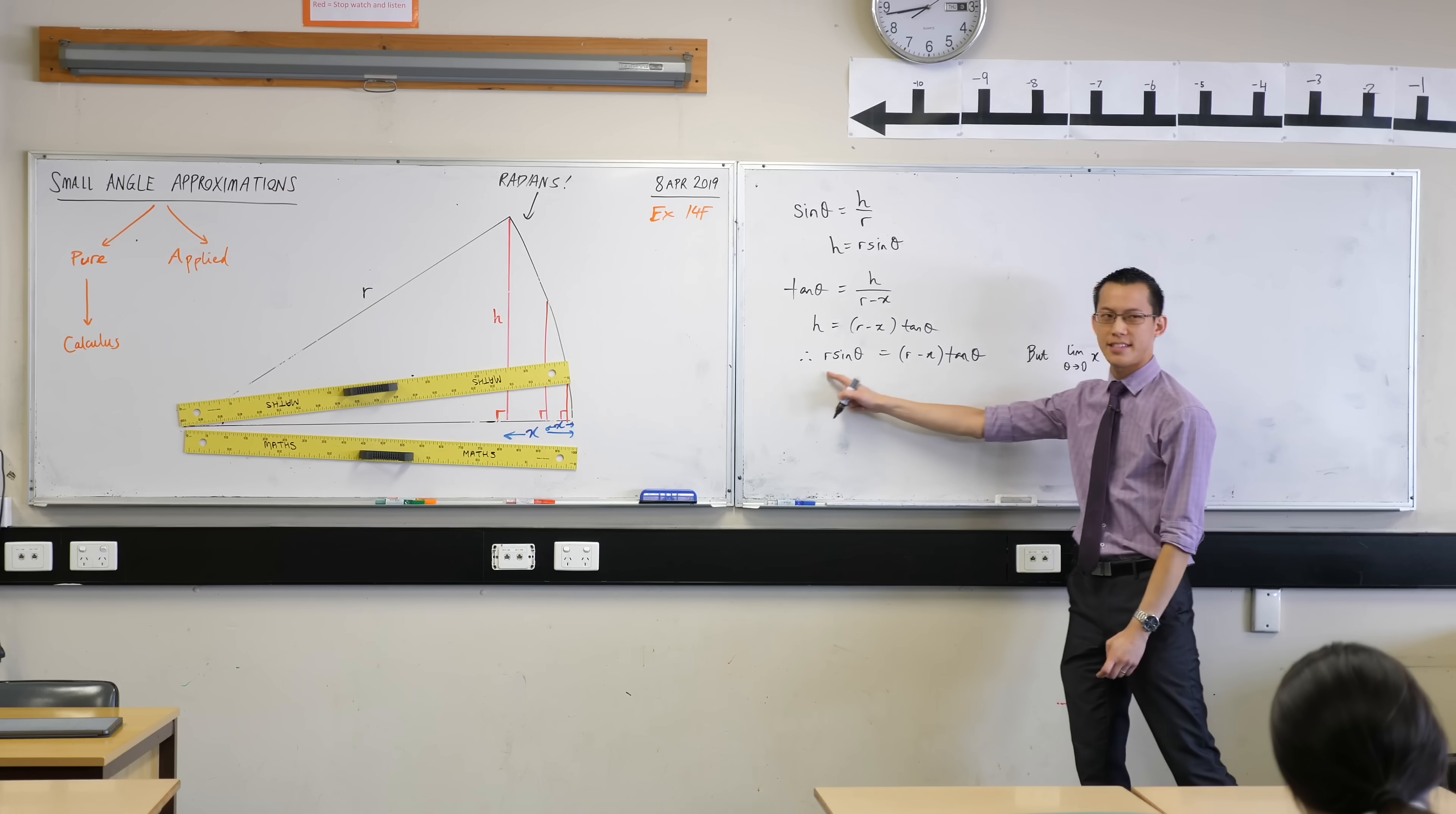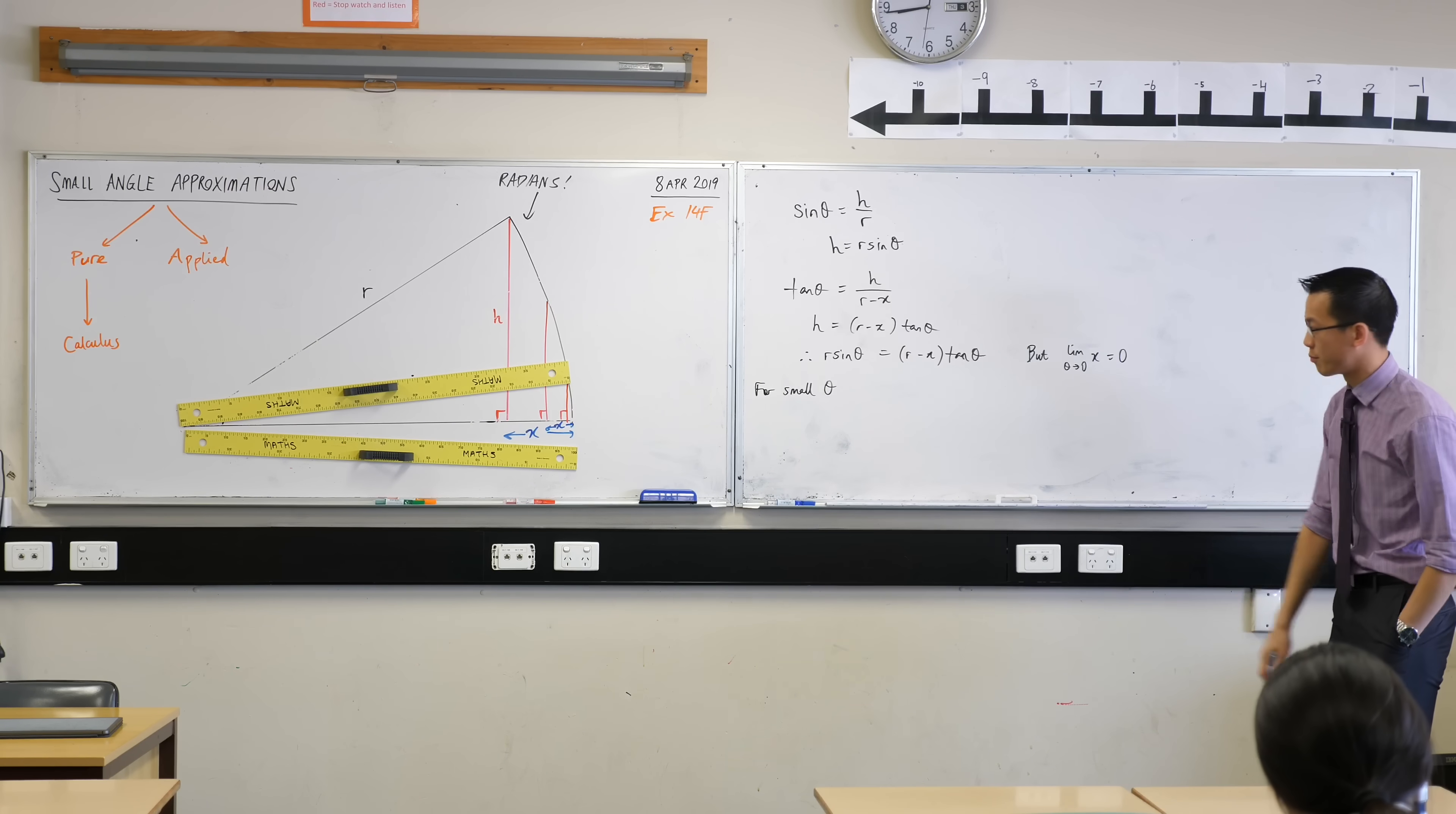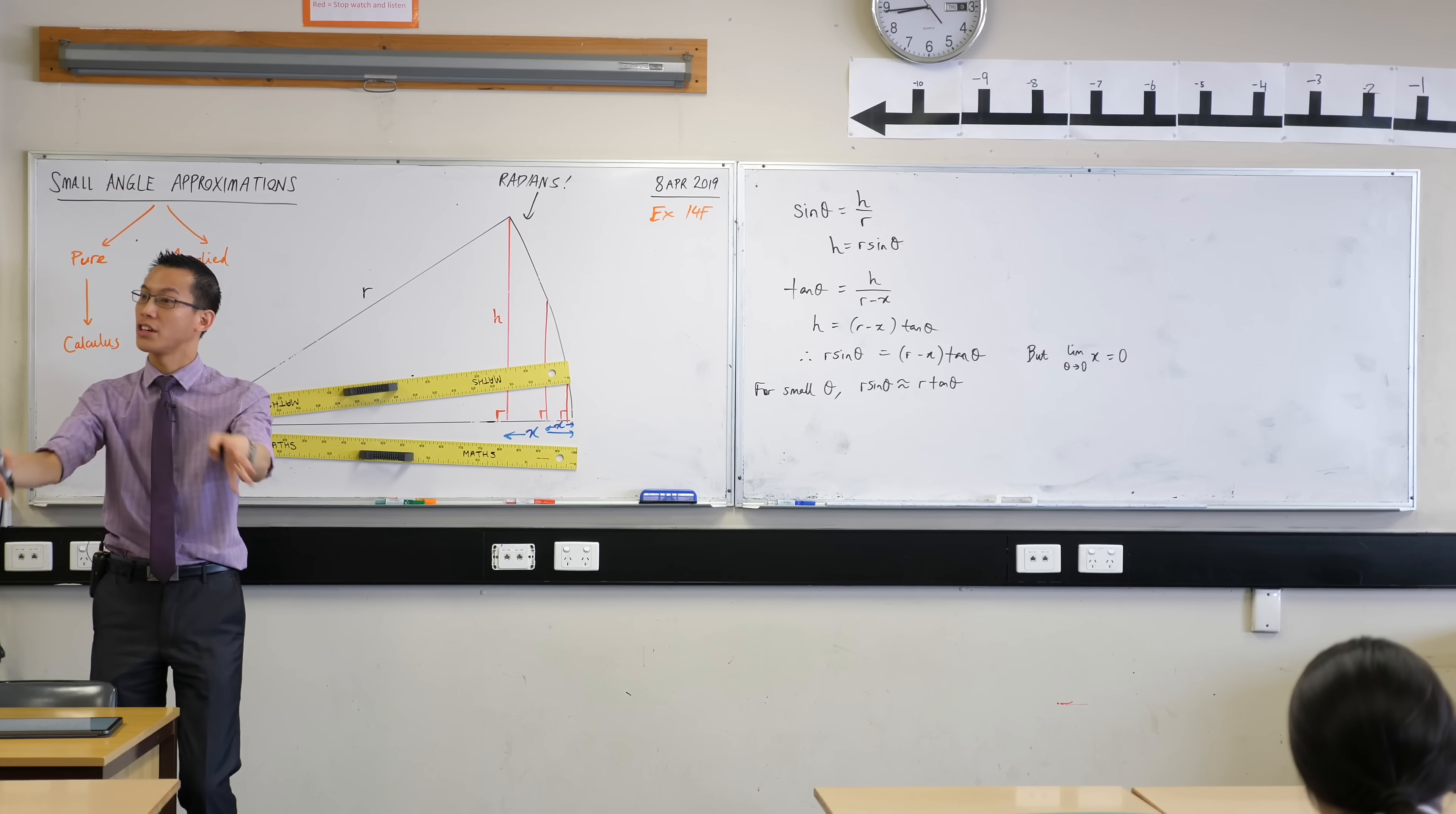I can take the limit of both sides here as theta approaches zero. In other words, for small values of theta, this is what happens when theta is approaching zero. We say, they're getting little. I'm going to have R sine theta on the left-hand side. What's going to happen over here? What's happening to that X? We just established this. That X is just vanishing away. It's just disappearing. So these things are going to become equal to each other without that X. You see what happened? That was like R minus zero and it's just vanishing away.